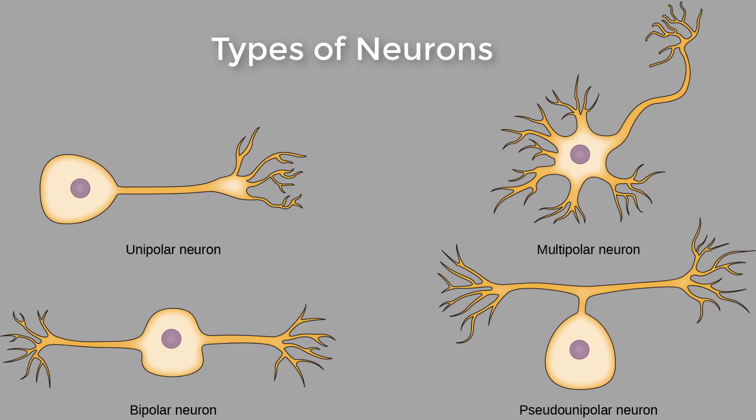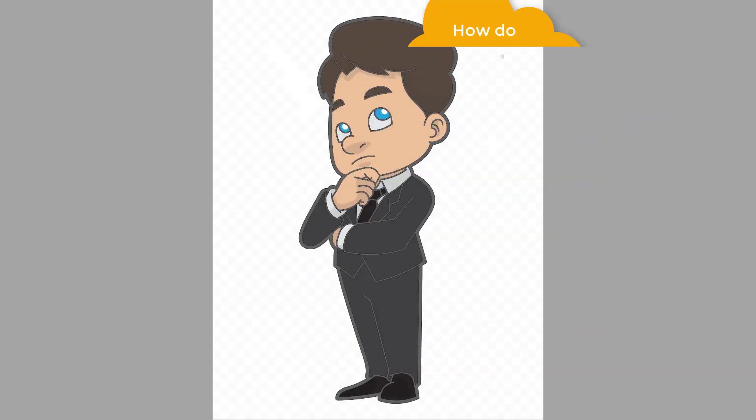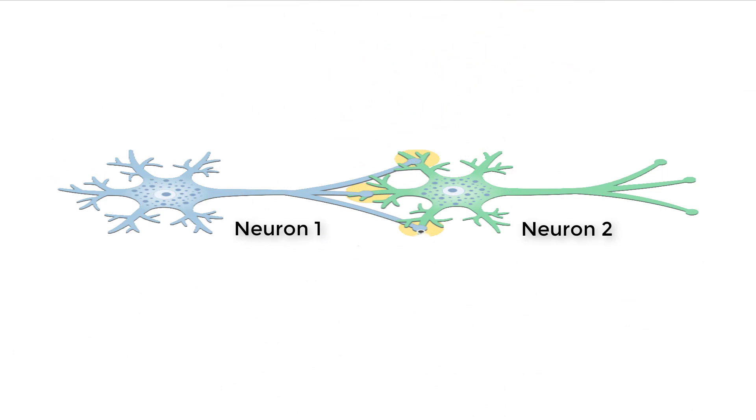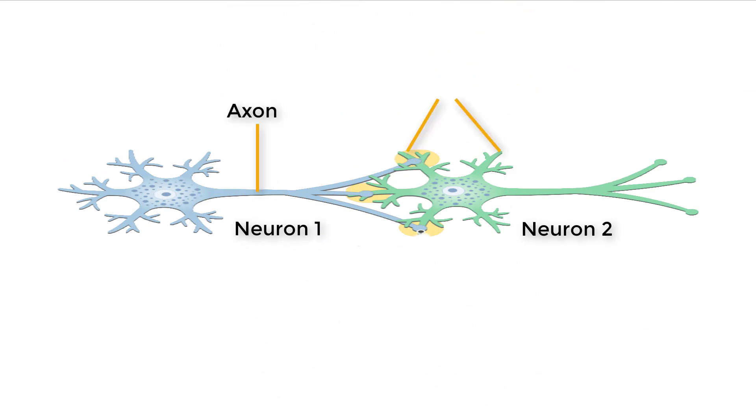As we have come to the end of the classification of neurons, let us get to its working. From previous information, we have seen that every neuron has an axon and a dendrite at two opposite ends. These are the two main components for the working of neurons.